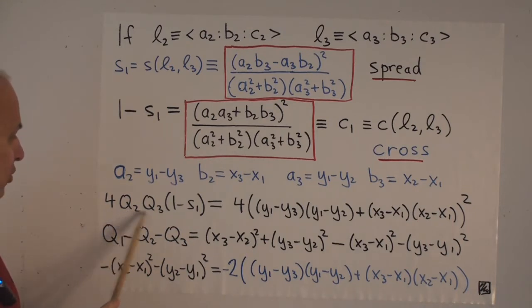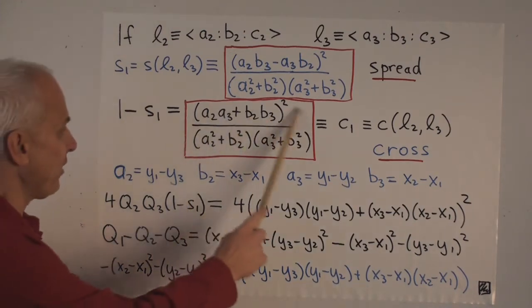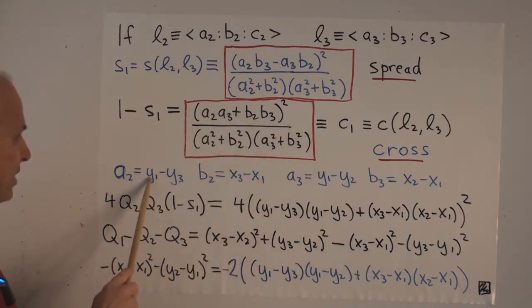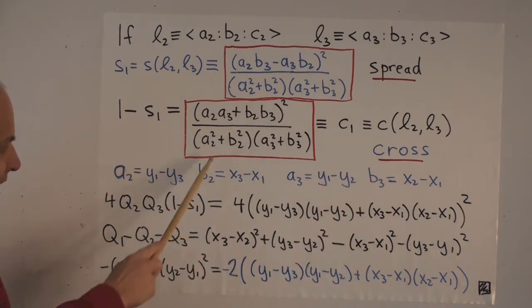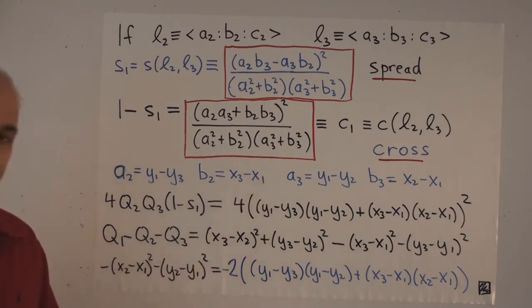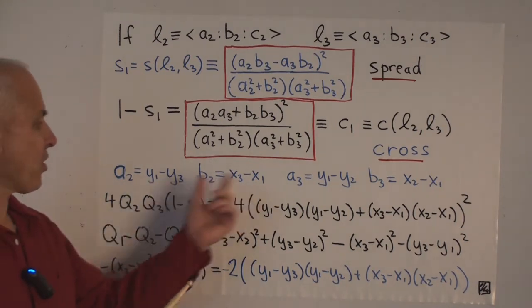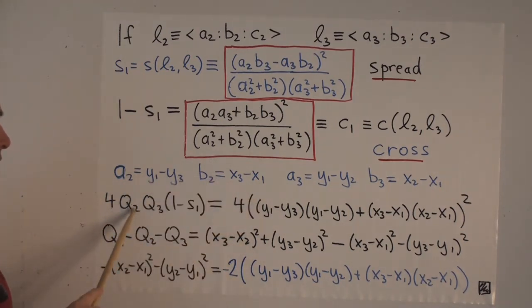The one side was 4Q2Q3 times 1 minus S1. What's that going to be? So we have to have a look at this 1 minus S1 substituted with these expressions here. Have a look at a2² + b2². That's this thing squared plus this thing squared. That's exactly the quadrance that we're calling Q2.